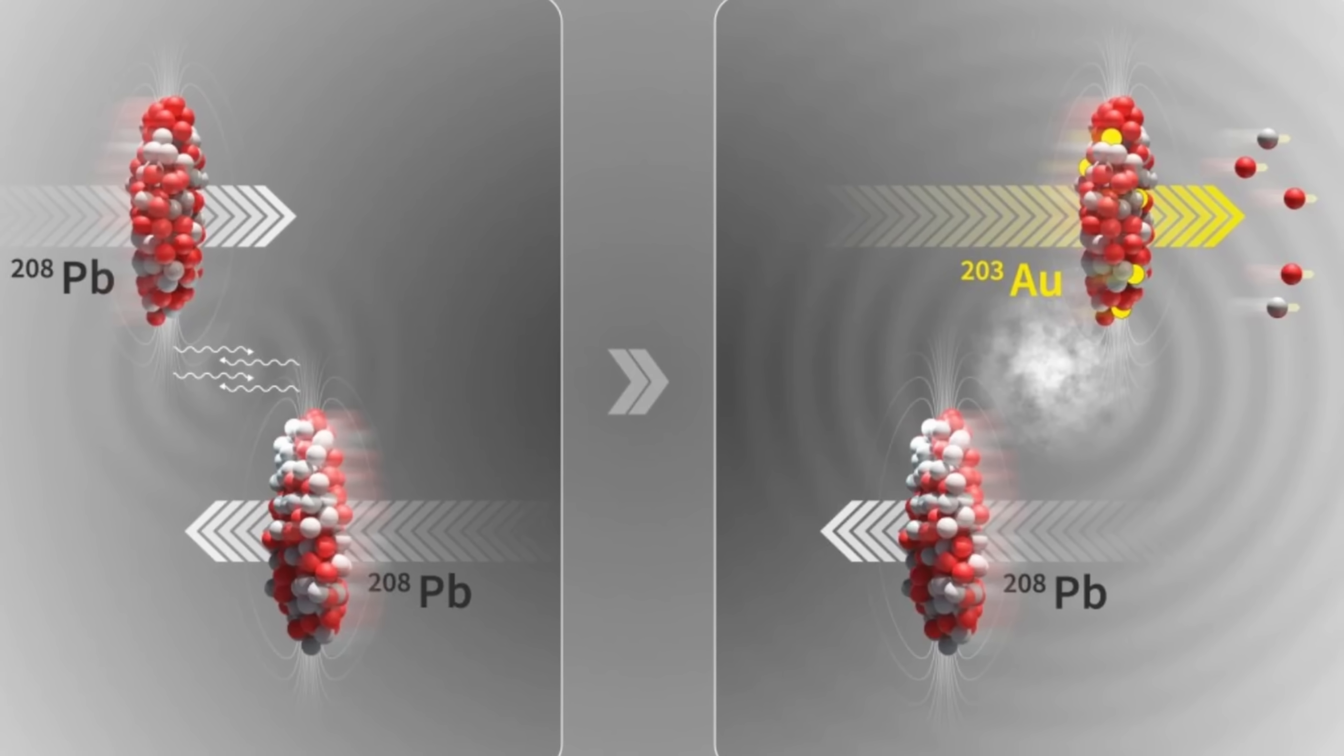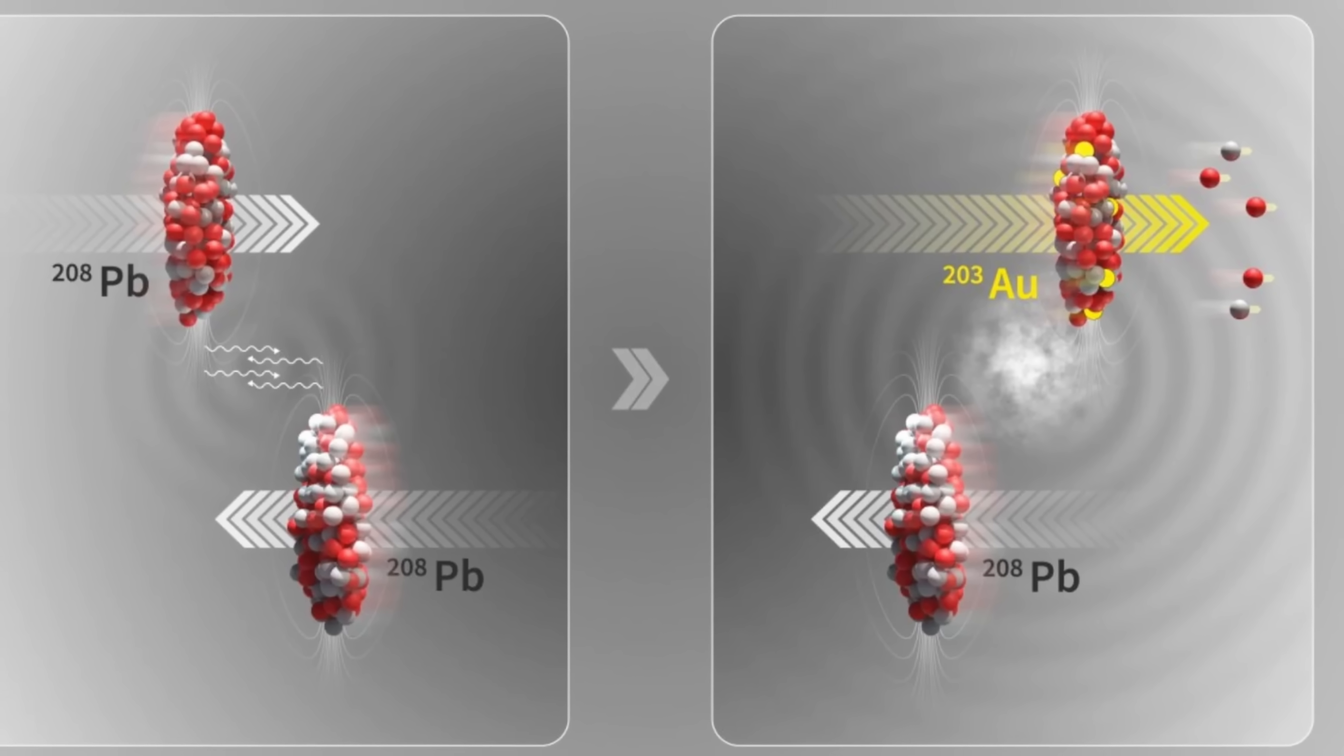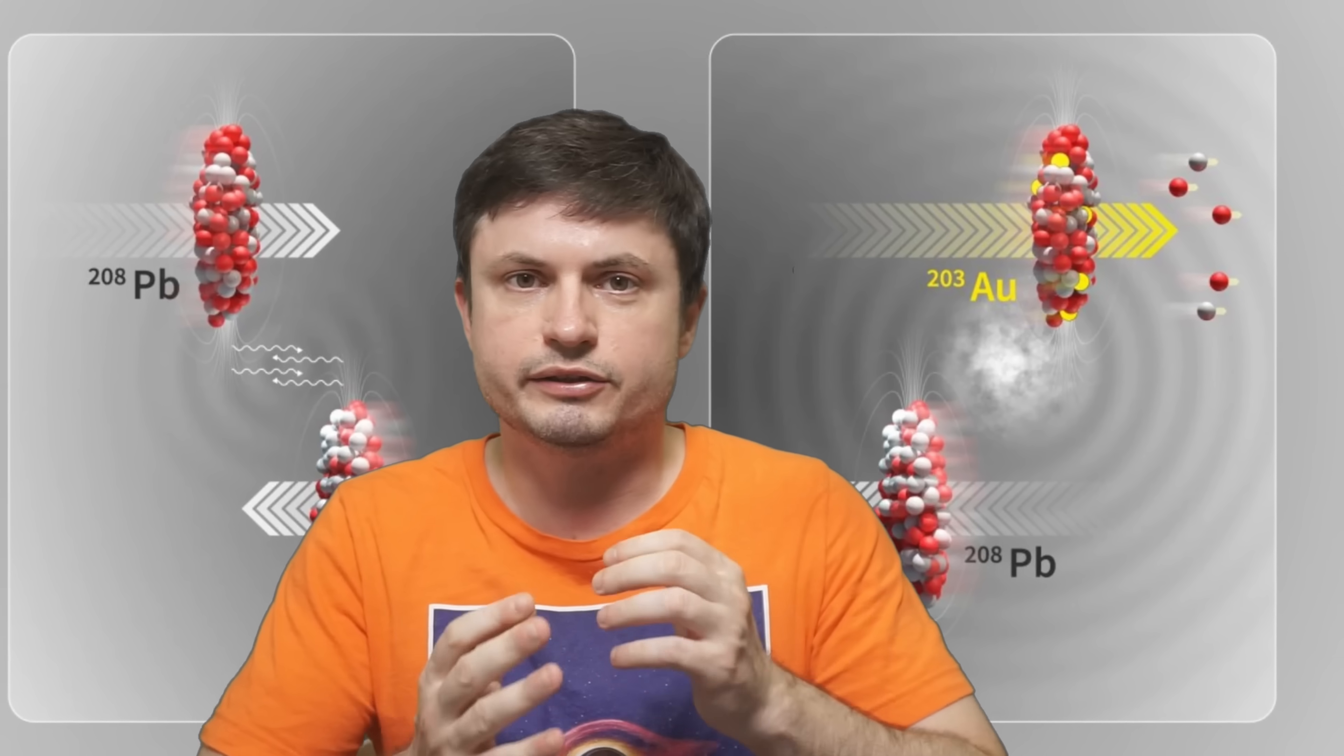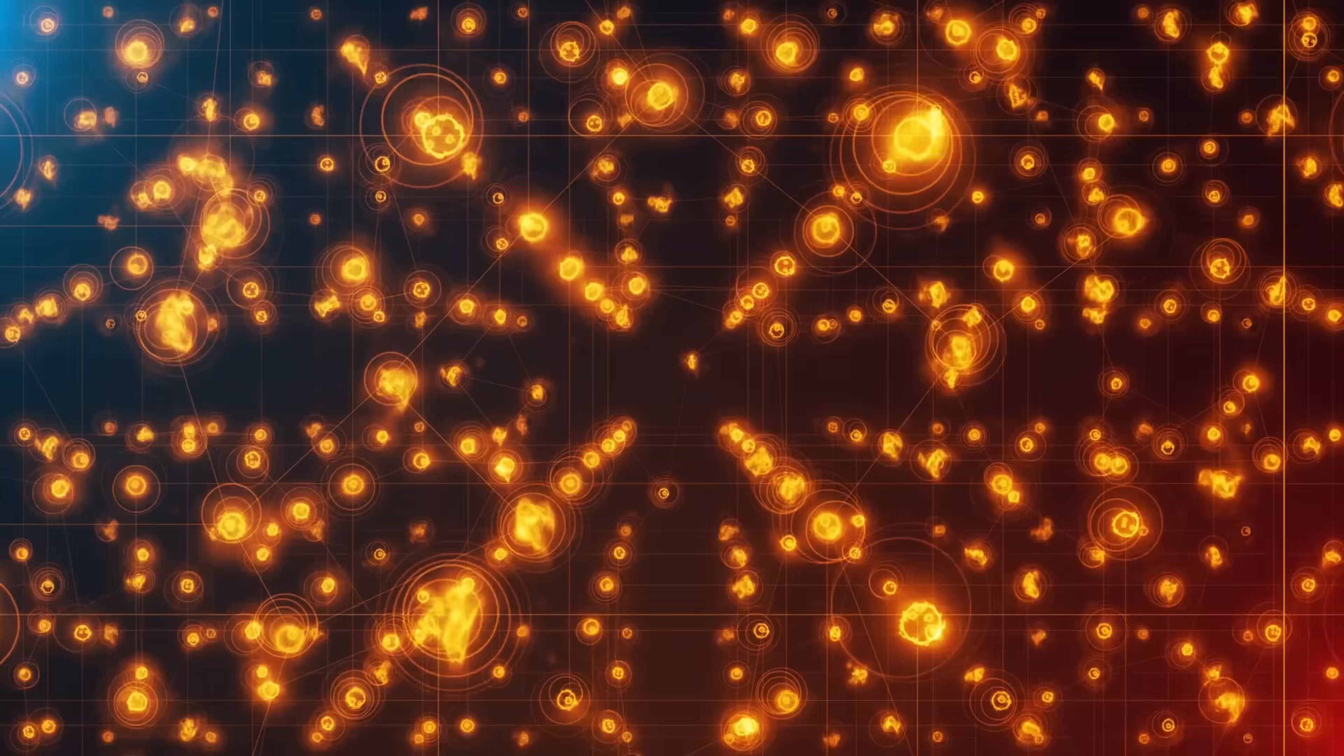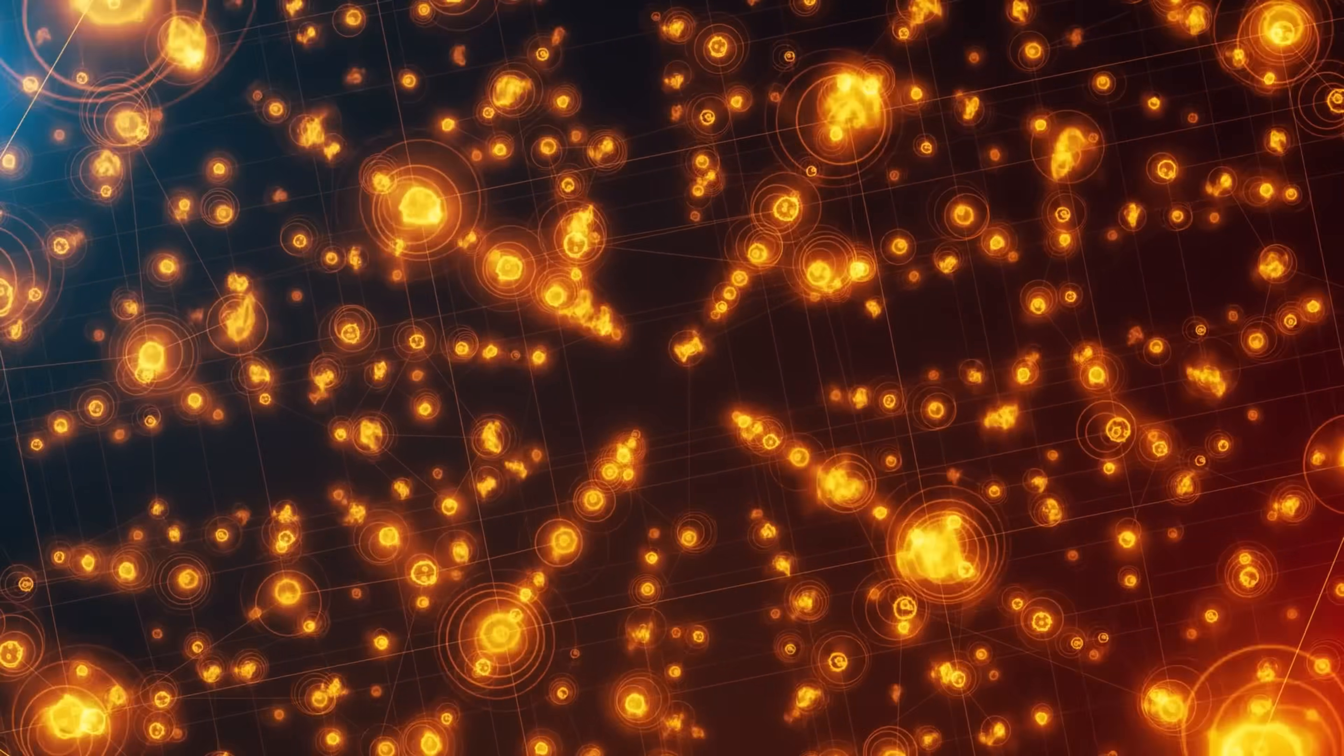And once again all of this was just the result of these lead-lead collisions, or near collisions, inside the particle accelerator. And so during run 2, which lasted for three years between 2015 and 2018, this resulted in a production of 86 billion gold nuclei, or approximately 29 picograms. So yeah, still quite expensive and very inefficient, but technically this was transmutation after all.